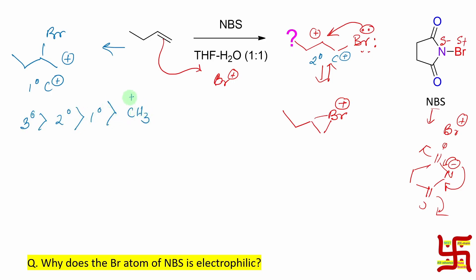Many students make the mistake of confusing methyl-plus versus primary carbocation — don't do that. Secondary is more stable because there are two C-C sigma bonds providing +I inductive effect, and there are four alpha hydrogens total that can participate in hyperconjugation, compared to only one alpha hydrogen in the primary case. More hyperconjugation means more delocalization and more stabilization.